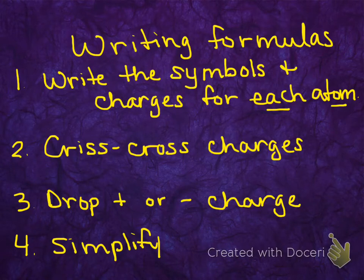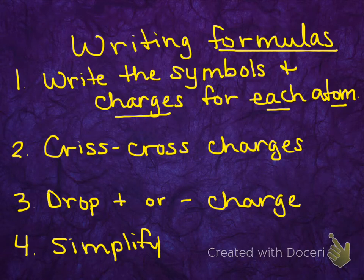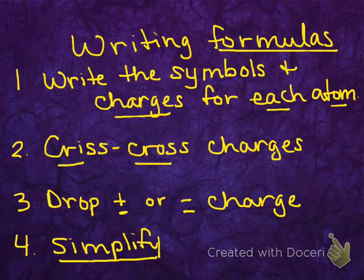The other thing we need to do is sometimes we'll be given the name of the compound and we will need to change that into a formula. The steps that we're going to take are: write the symbol of each atom and the charge of each atom. Then we're going to do something I refer to as crisscrossing charges, where we switch the charges down and they become the subscript for the opposite atom. Then we're going to drop the positive or negative from the charge. And then finally, if possible, we're going to simplify.